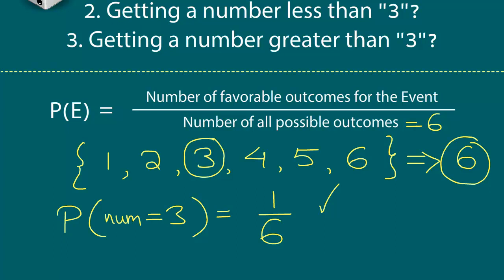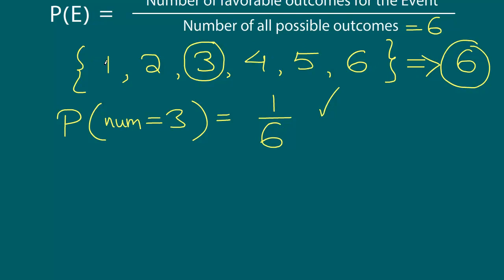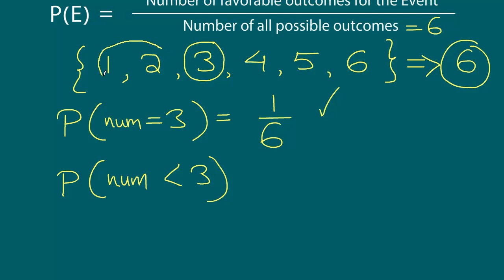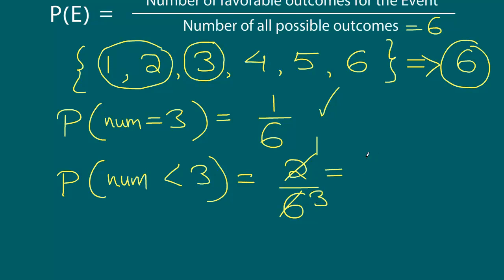For the probability of getting a number which is less than 3, let's look at our 6 outcomes. If we get 1, that satisfies our event because 1 is less than 3. If we get 2, it also works. But 3 is not less than 3, and 4, 5, and 6 are all greater than 3. So only 2 outcomes are favorable. The total favorable outcomes is 2 divided by 6, which simplifies to 1/3.